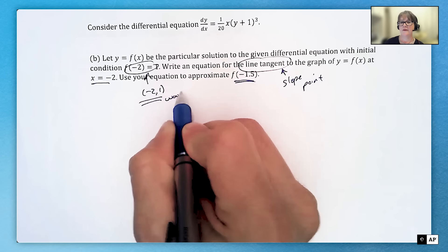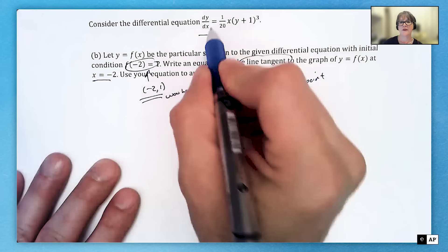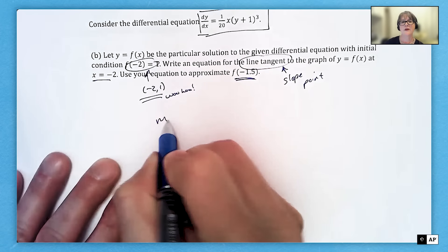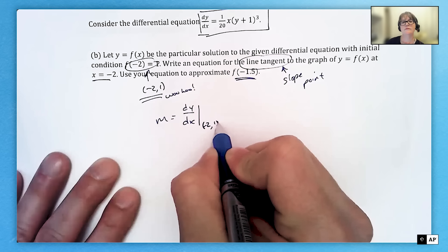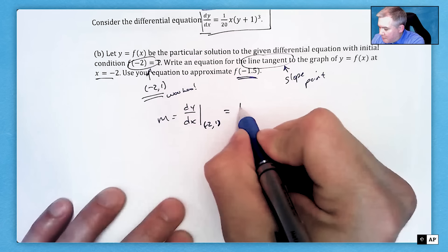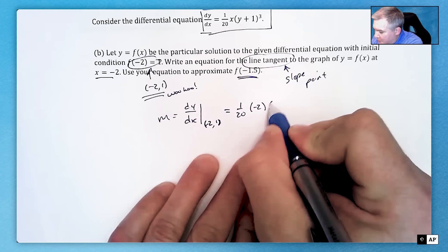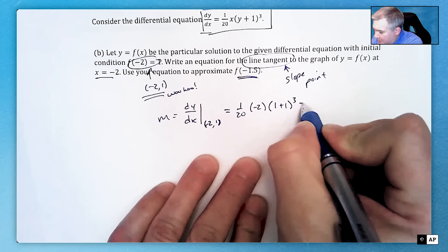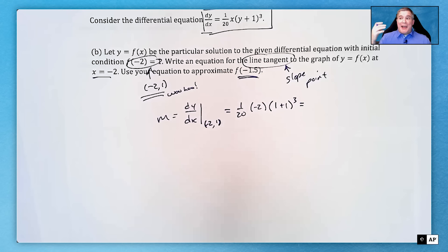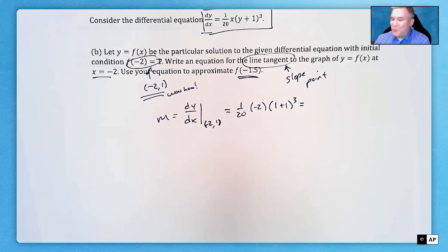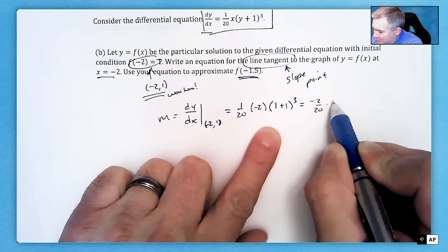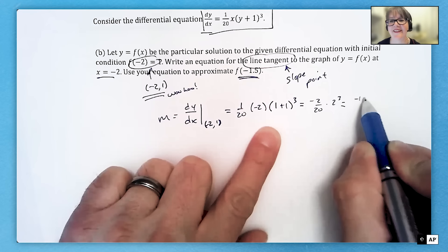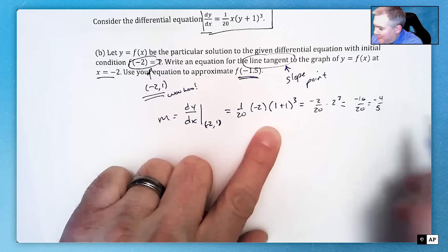The slope is found by using the differential equation, since dy/dx is the formula for slope. The slope is dy/dx evaluated at (-2, 1): (1/20)(−2)(1+1)³. That's (1/20)(−2)(2³) = (1/20)(−2)(8) = −16/20 = −4/5. You could leave it as −16/20 if you're more comfortable, but the slope is −4/5.